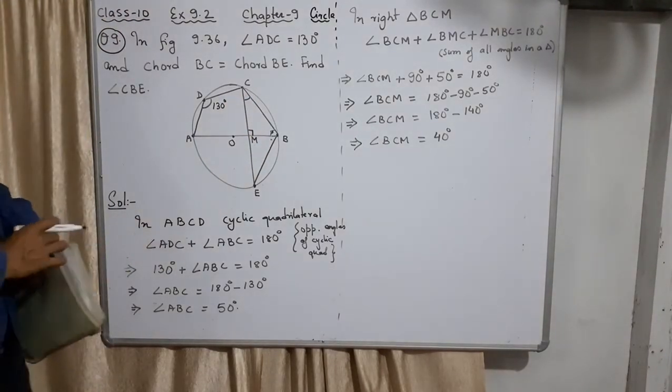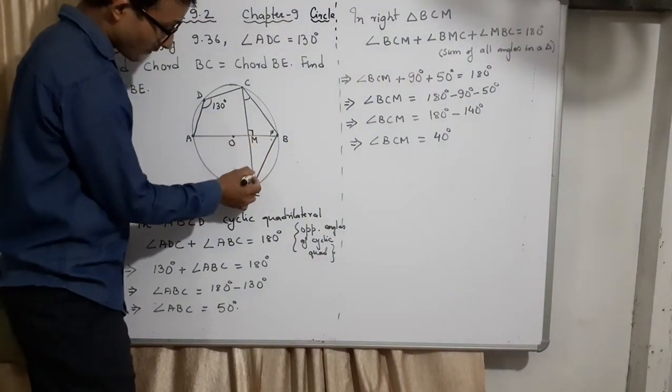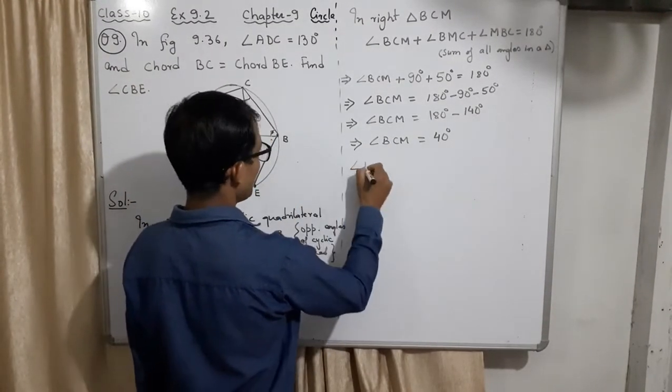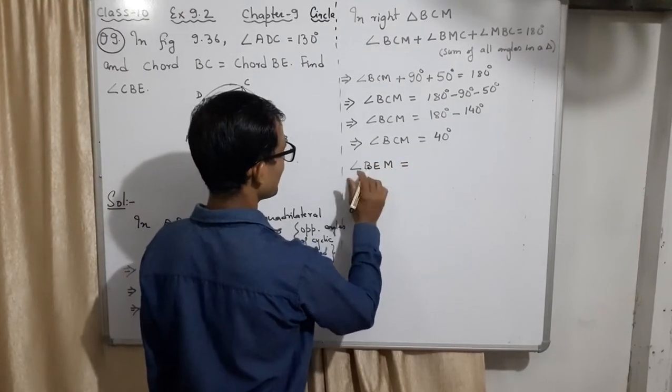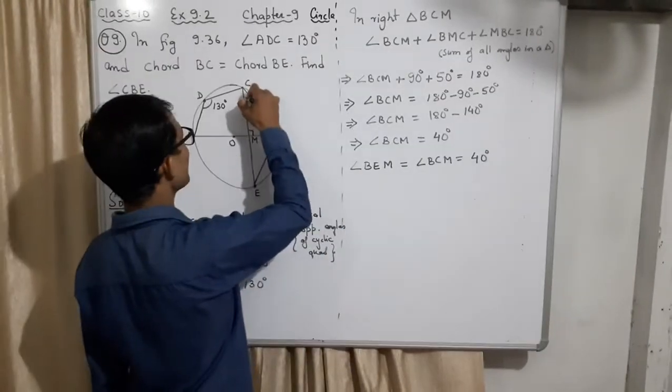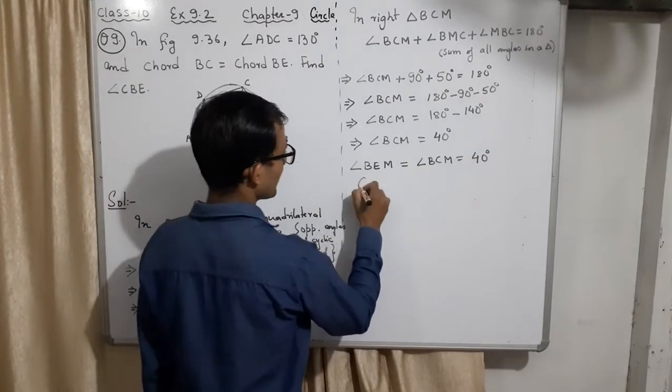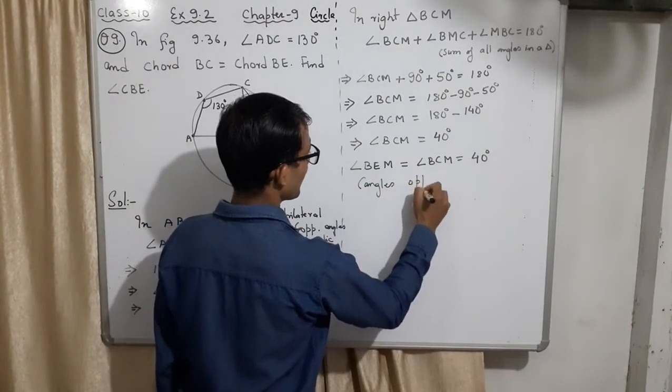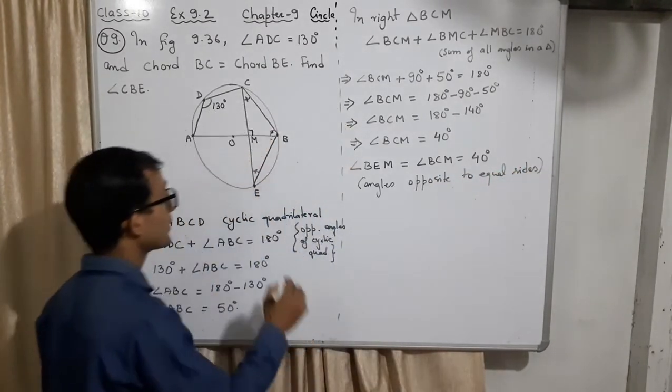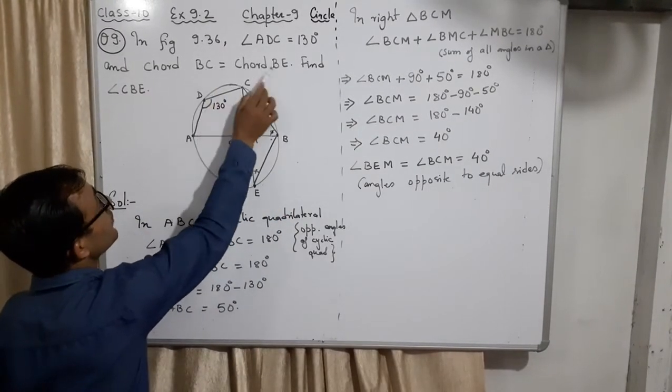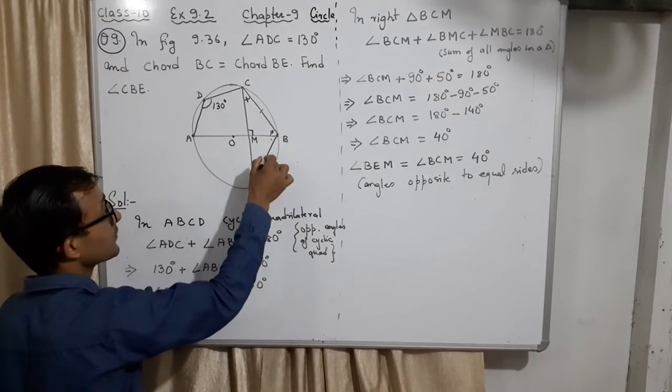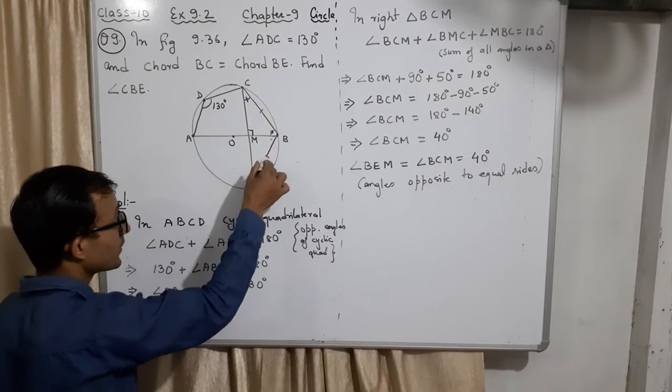I will go to this triangle and try to find what is this. This will be known very easily. Angle BEM is equal to angle BCM equal to 40 degrees. This angle will be equal to this angle. What is the reason? Angles opposite to equal sides. How? Because BE is equal to BC. BC equal to BE, you see. BC equal to BE. In this triangle, these two sides are equal, so their opposite angles, its opposite angle is this one, its opposite angle is this one, they are also equal.